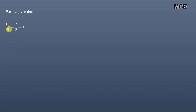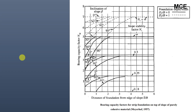We compute the ratios: df/B = 2/2 = 1, and b/B = 1/2 = 0.5, with slope angle β = 30°. The Meyerhof bearing capacity factor chart shows the horizontal axis as the ratio b/B (distance of foundation edge from slope edge divided by footing width), and the vertical axis as the bearing capacity factor Ncq. For df/B = 0, use the solid line; for df/B = 1, use the dashed line.